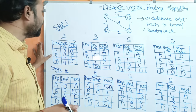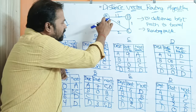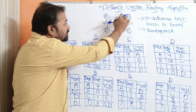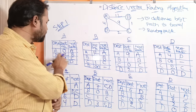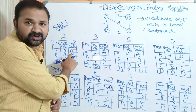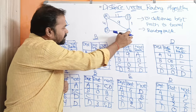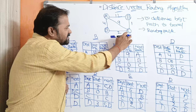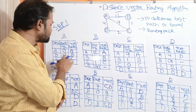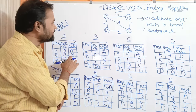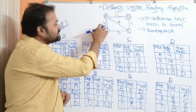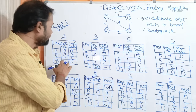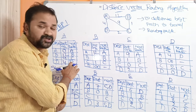For A to B, there is a path, so the distance is 12 and the next router to visit is B. For A to C, the distance is 9 and the next router to visit is C. For A to D, the distance is 4 and the next router to visit is D.